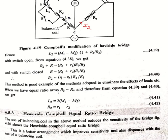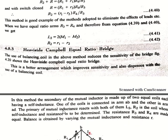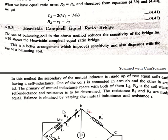Like in the previous case, if we take R3 equal to R4 to simplify the equations, putting this into equations 4.39 and 4.40, we get L2 equal to 2 times (M1 minus M2) and R2 equal to small r1 minus r2. Now coming to the Heavyside-Campbell equal ratio bridge, which is also a modification of Campbell's bridge — it is a better arrangement to improve sensitivity and also eliminates the use of a balancing coil.